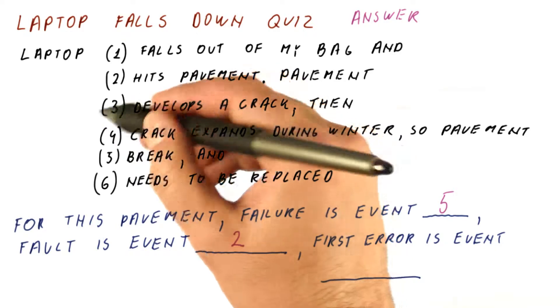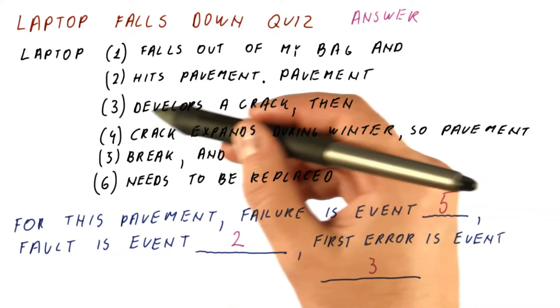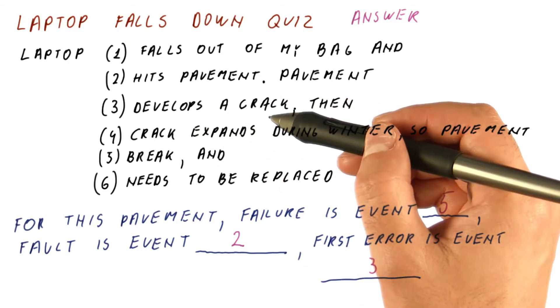And now, what was the first error? Well, it was that the pavement developed a crack. The structure, the internal behavior of the pavement is no longer the same as the proper pavement.